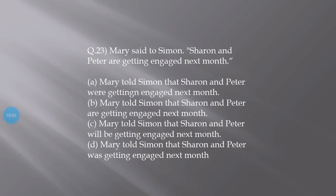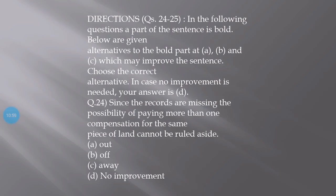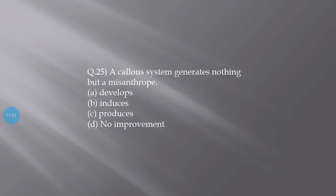Next question: Mary said to Simon, Sharon and Peter are getting engaged next month. When we convert to passive, the answer is: Mary told Simon that Sharon and Peter were getting engaged next month. The next question is about sentence improvement. Since the records are missing, the possibility of paying more than one compensation for the same piece of land cannot be ruled aside. The correct answer is cannot be ruled out.